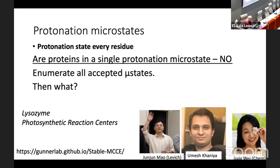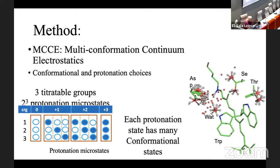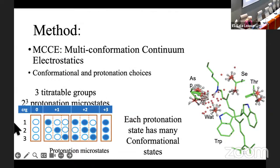What are we talking about when I talk about these protonation microstates? If I have one, two, three groups, they can all be neutral. Any one of them can be ionized. Any two of them can be ionized, and any three of them can be ionized. So each one of these columns is a different protonation microstate for this system of three residues. In MCCE, each protonation microstate will be combined with many conformational states that have that protonation state.